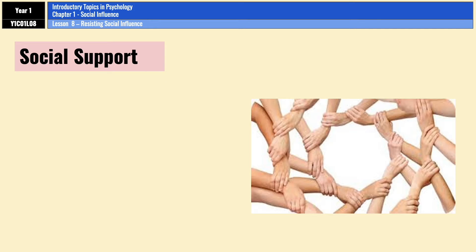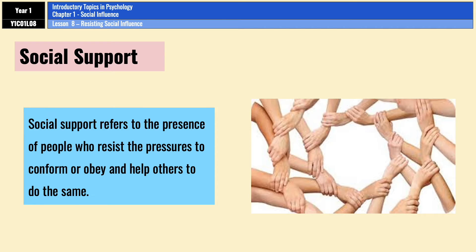Social support refers to the idea that the presence of people who resist the urge to conform or obey can help others to do the same, because they act as models or allies in the situation and show that resistance is actually possible.